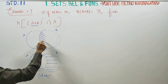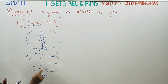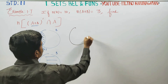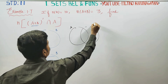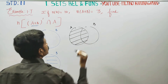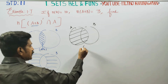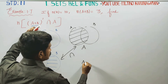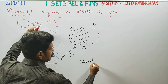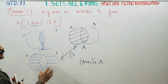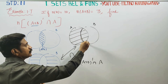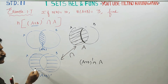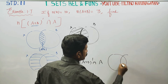This is my A intersection B. Shade this region. This is A intersection B complement. Now shade only the A region. This is my A and B. This is my A — this is the common area, intersection. A intersection B whole complement — A common area, this is the common area.